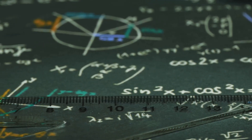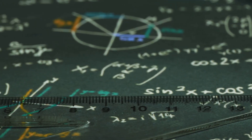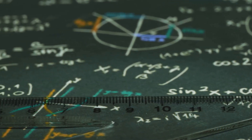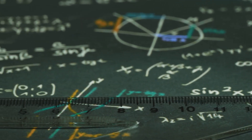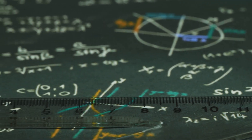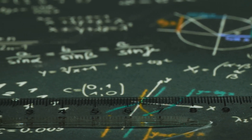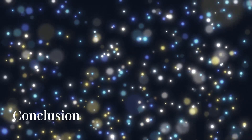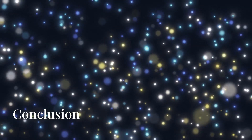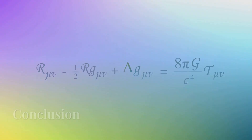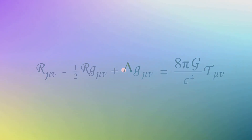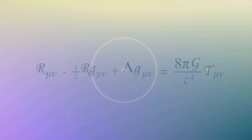According to quantum statistics, it is S equals K times the natural logarithm of W divided by N factorial. By accounting for the indistinguishability of particles, quantum statistics provides a consistent and accurate prediction of entropy, correctly showing no entropy change for mixing identical gases and thus resolving the Gibbs paradox.